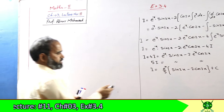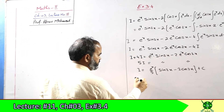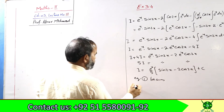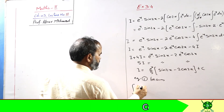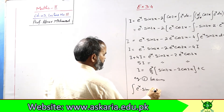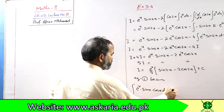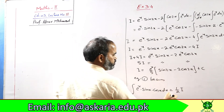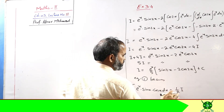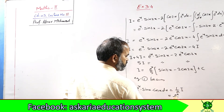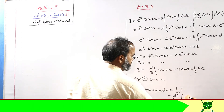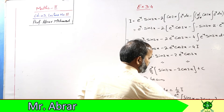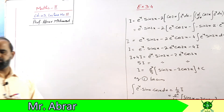Equation 1 becomes — sin x cos x dx is equal to one by two times I. Jab aap idhar I ki value substitute karenge, yeh e^x over ten aayega, aur baaki saara wahi aayega. C ko akele rehne dein. Yeh step kar lena hai.